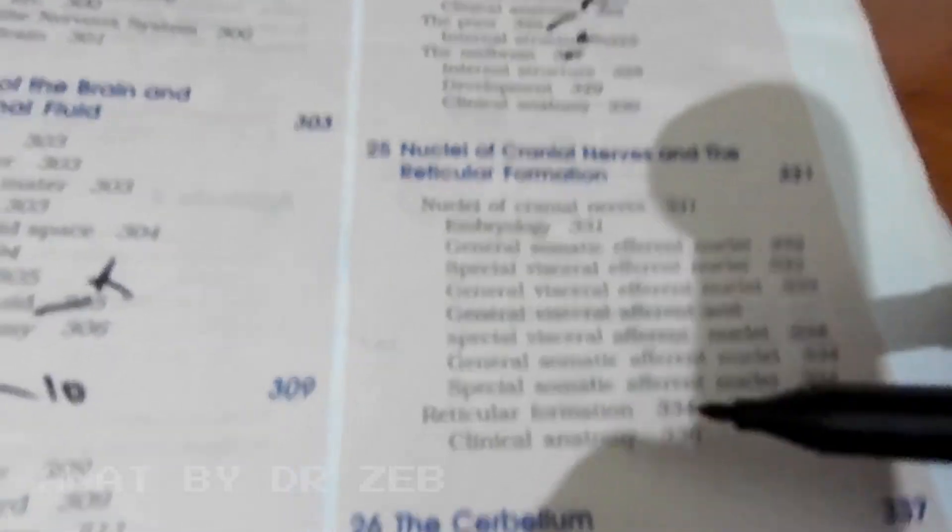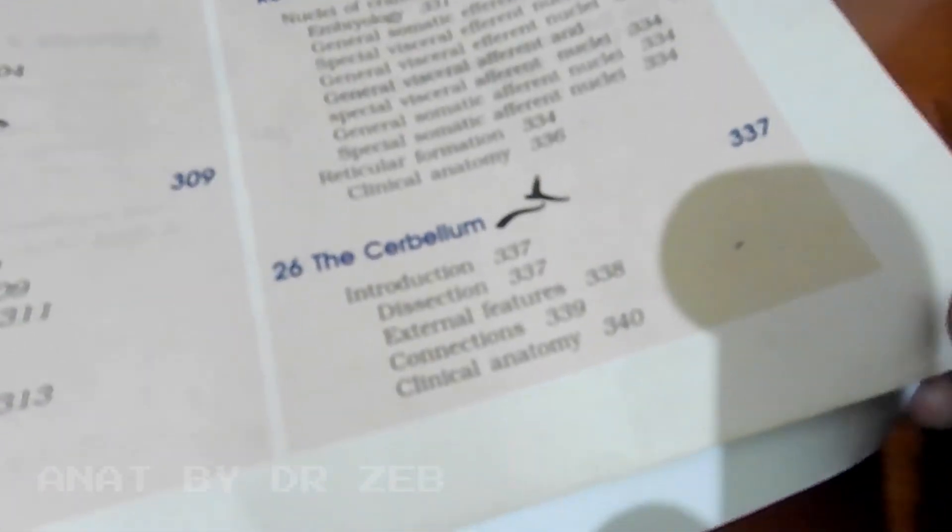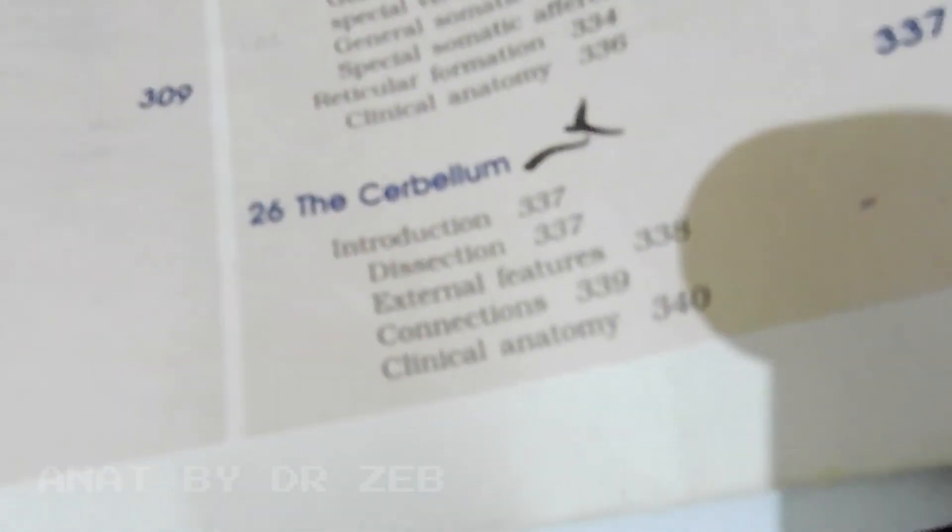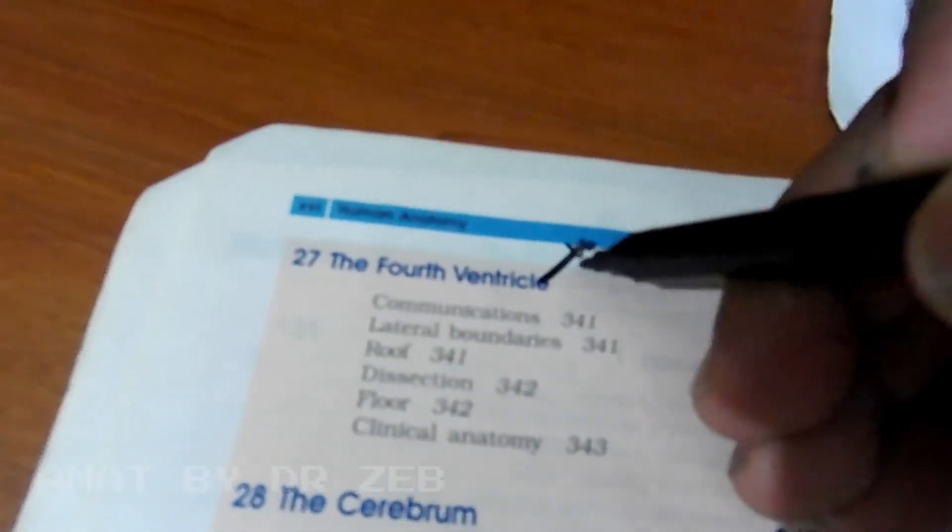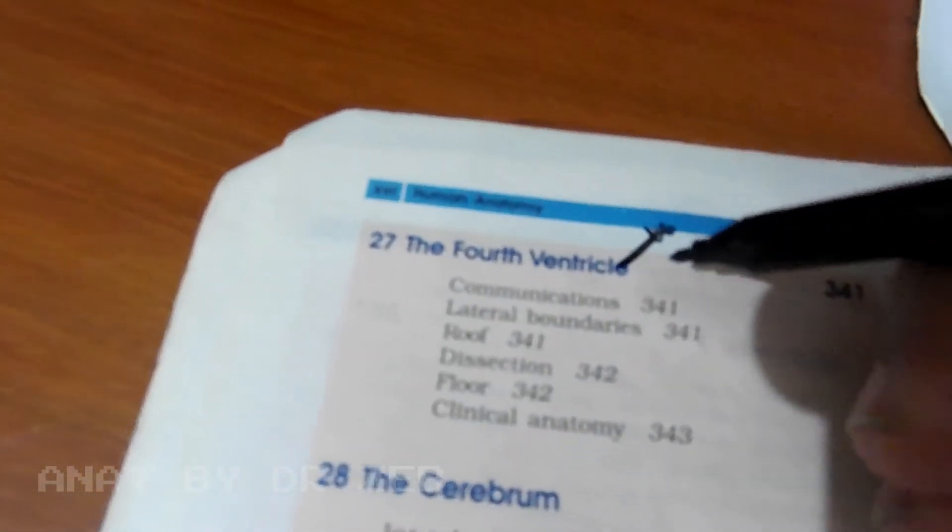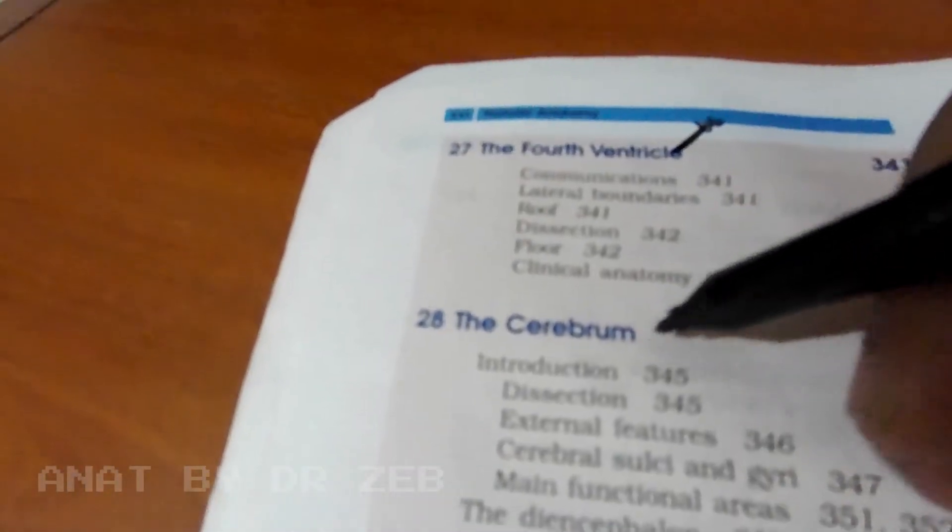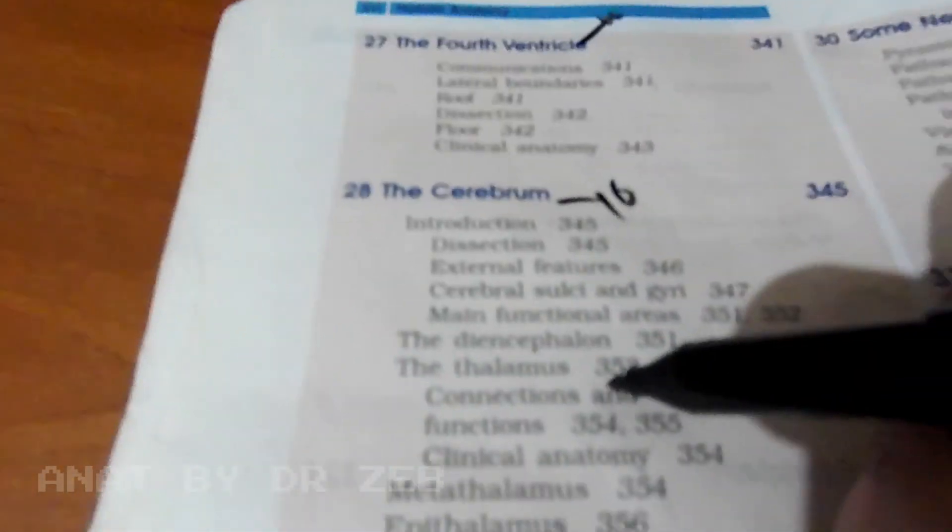Cerebellum is for five marks, very important question. Sometimes they may confuse and ask for ten marks, but the worth of answering is only for five marks in cerebellum. The fourth ventricle is a classical question for ten marks or it may come for five marks. It's very easy to write.